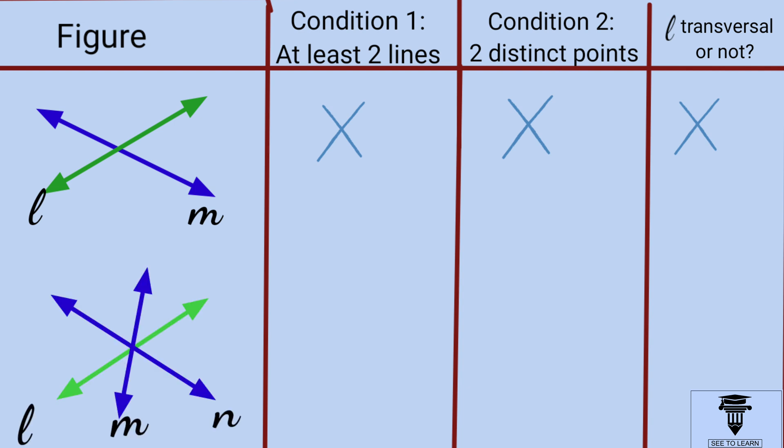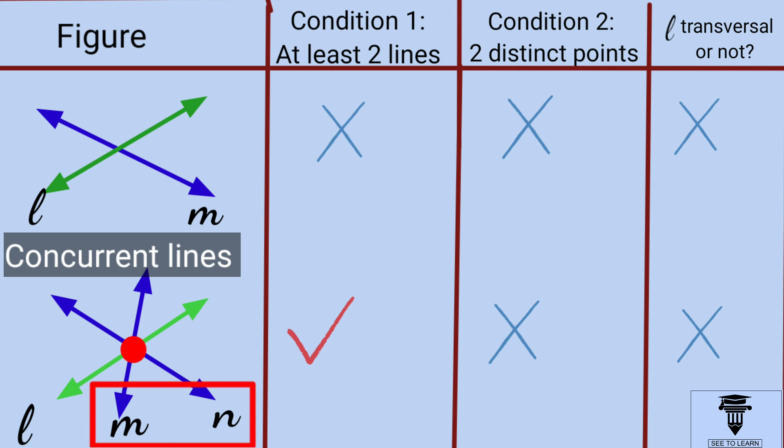Now, the second figure. L cuts two lines, so the first condition is satisfied. But let's check the second condition. L is cutting the lines at only one point and not at distinct points, so it's not a transversal. Such lines are called concurrent lines.